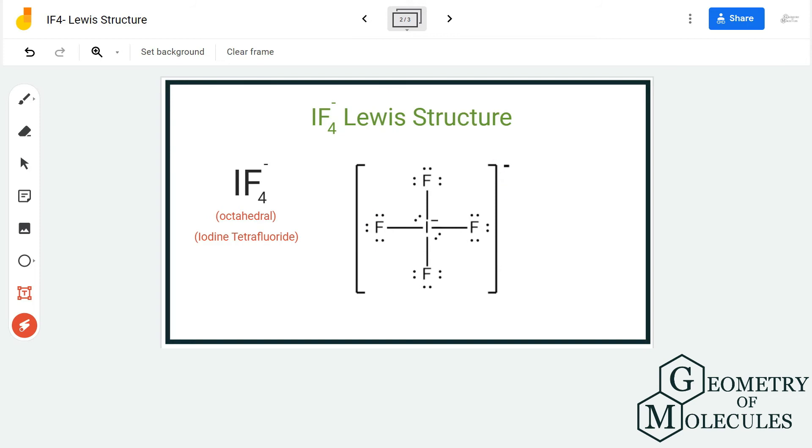In this structure, there are complete octets of fluorine atoms and there are two lone pairs of electrons on iodine atom. Because iodine atom has these lone pairs, it has a formal charge of minus one, which we are going to place after writing the Lewis structure.